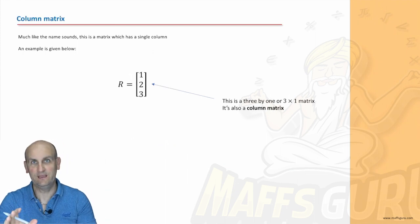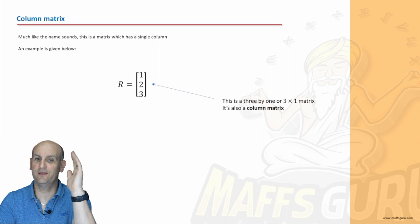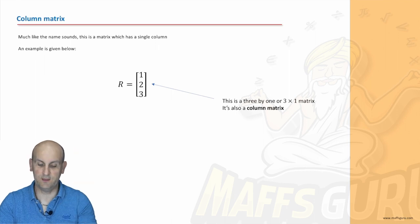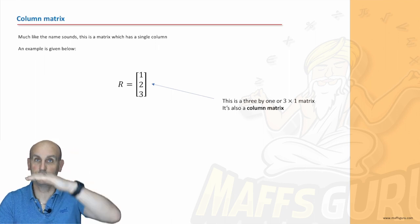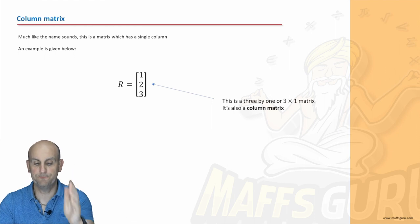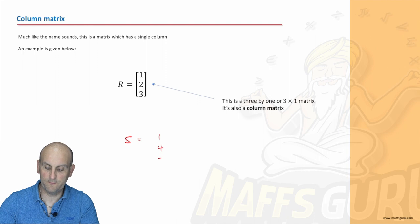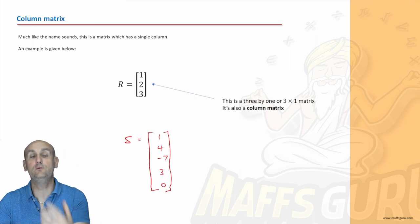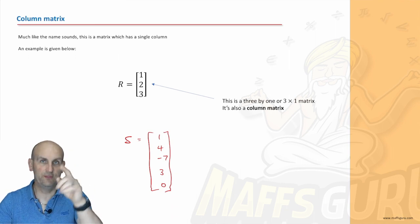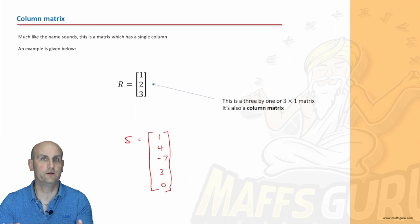Column matrix. Let me guess. Uh-huh. That's a matrix that has just one column. So, there we go. This is an example of a 3 by 1, right? So, it's got three rows but one column. We get S is equal to [1, 4, minus 7, 3, 0]. This would be an example of a column matrix. Now, you notice when I do columns, I always write the numbers first, then do the square brackets. It's way too hard to do the square brackets first and then try and fit the numbers in. Just a little bit of a top tip for you there, right?